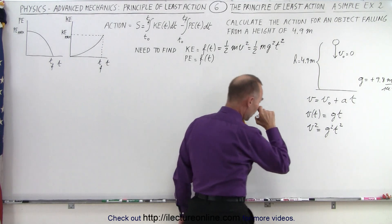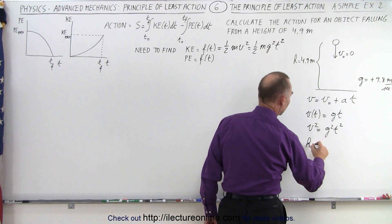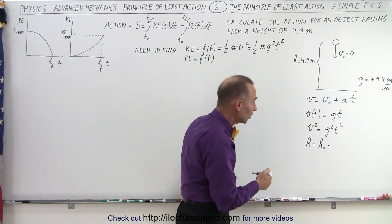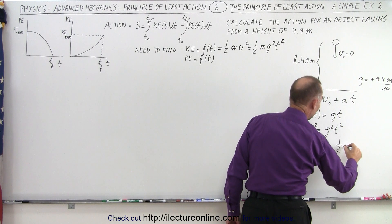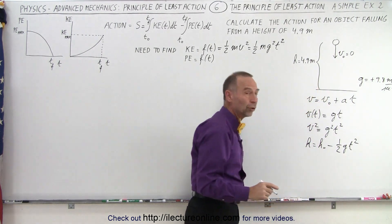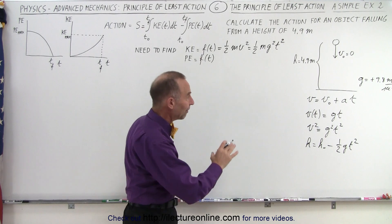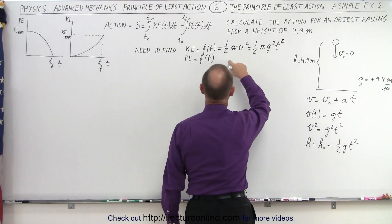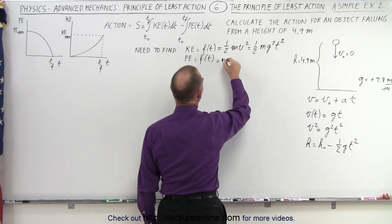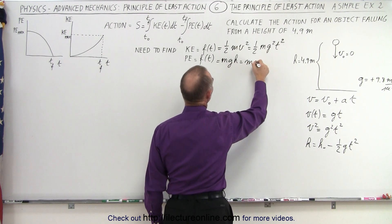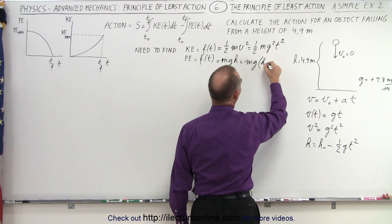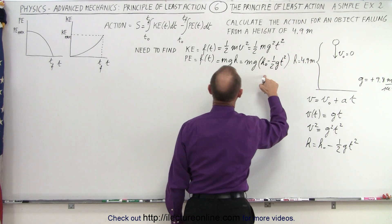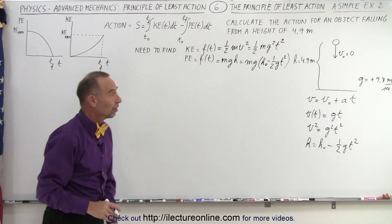For the potential energy, the height h equals some initial height minus one half g t squared — we don't have the velocity term because we have an initial zero velocity. We then substitute this into the mgh equation for potential energy. So mgh becomes mg times the quantity h-naught minus one half g t squared, and that goes into the integral for the average potential energy.